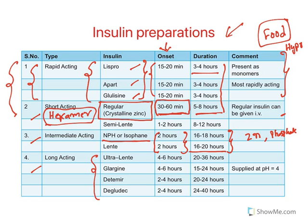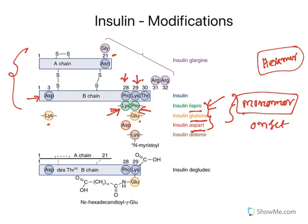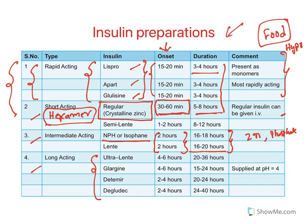Long acting insulins include glargine, detemir, and degludec. For detemir, a myristoyl group — a free fatty acid — is attached. For degludec, hexadecanoic acid and glutamic acid are attached. When you attach such free fatty acids, the duration of action is greatly increased. They act for 1 to 2 days, so once-daily dosing is enough for these long acting insulins.